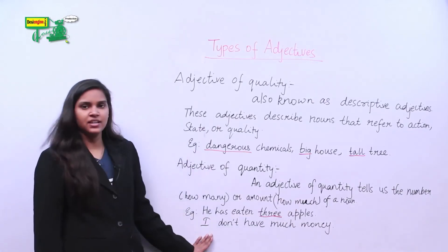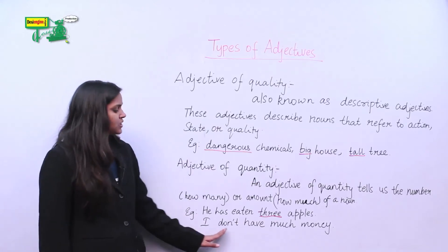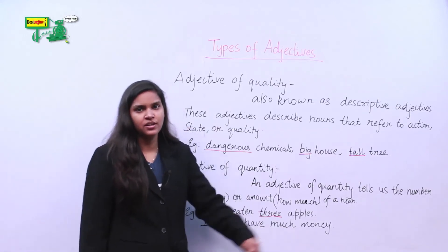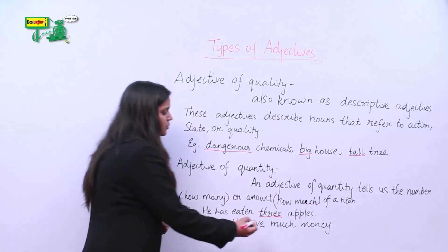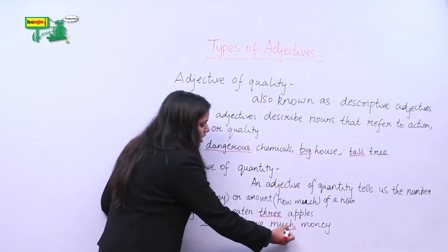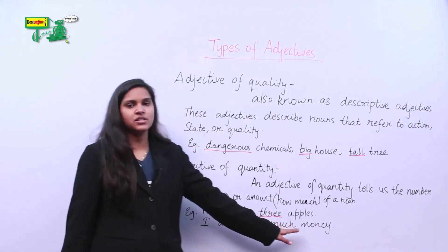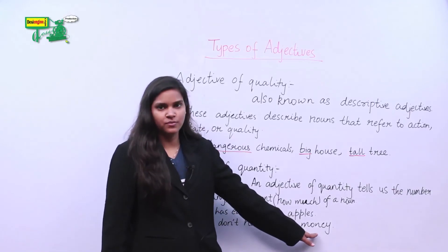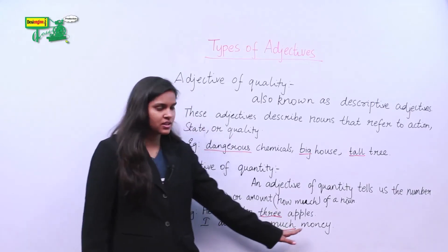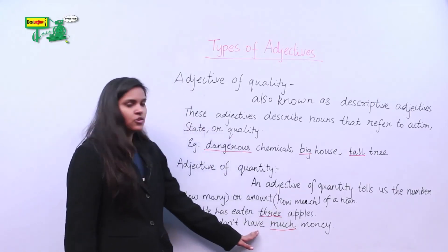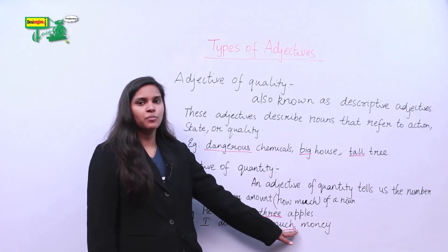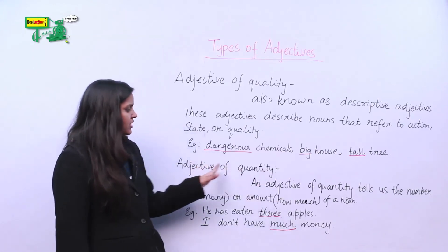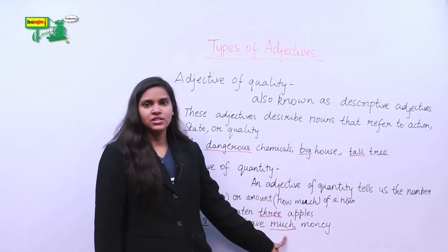Let's take another example: I don't have much money. Here, the word much tells me the amount of money that I have, that it is not much. Therefore, much becomes my adjective of quantity.